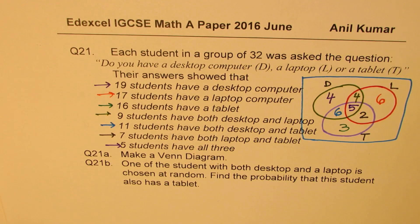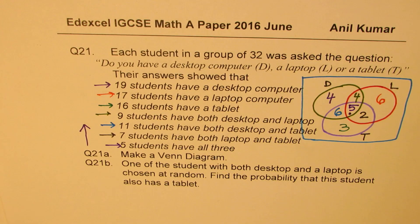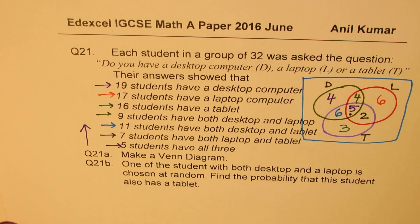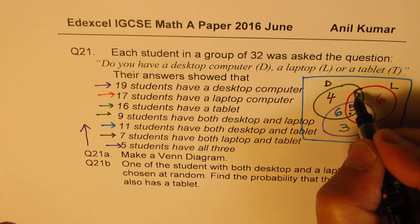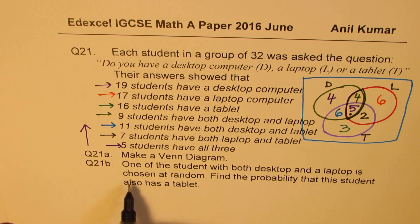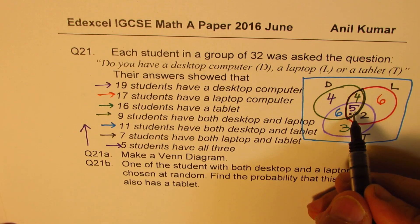The idea is to begin from the most common region and work outward — that is the starting point. The Venn diagram is now complete. For part B, one student from those with both desktop and laptop is chosen at random. That group has 9 students total. We need to find the probability that this student also has a tablet.